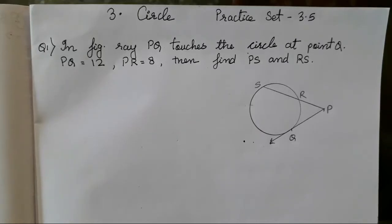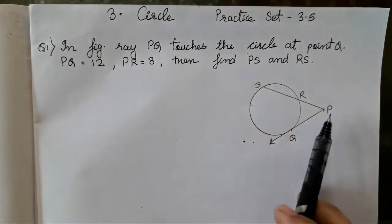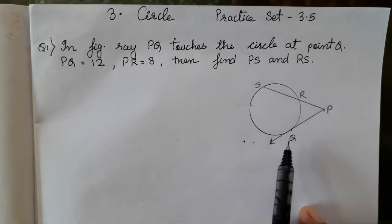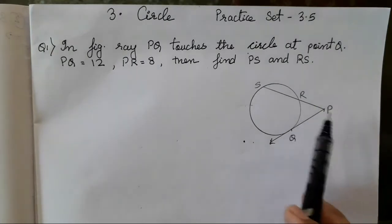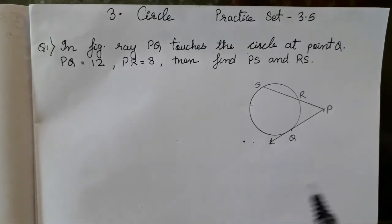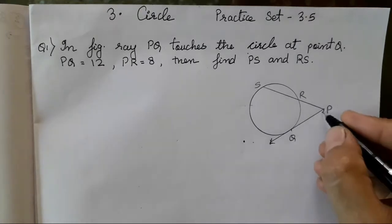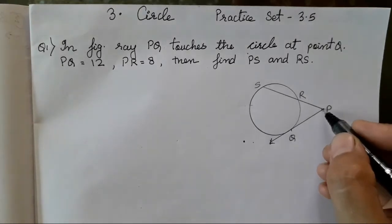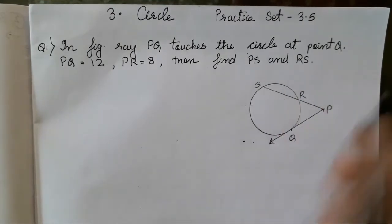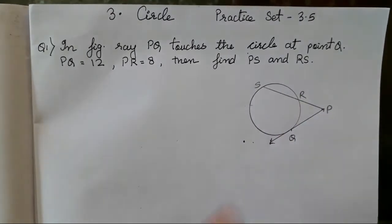Hello everyone, today we are going to do Chapter 3, Circle Practice Set 3.5. Let's start with the first question. In the figure, ray PQ touches the circle at point Q. PQ is 12 cm, PR is 8. Then find PS and RS. So we have to find the distances between them.